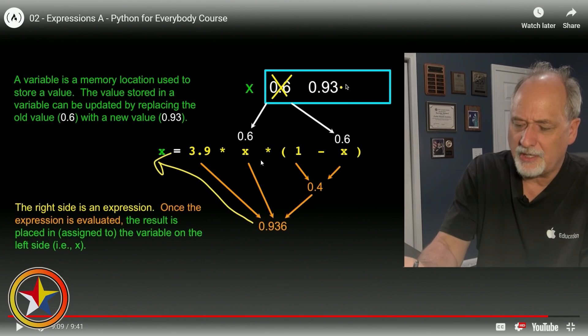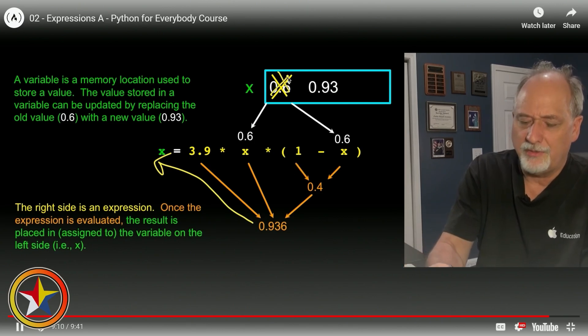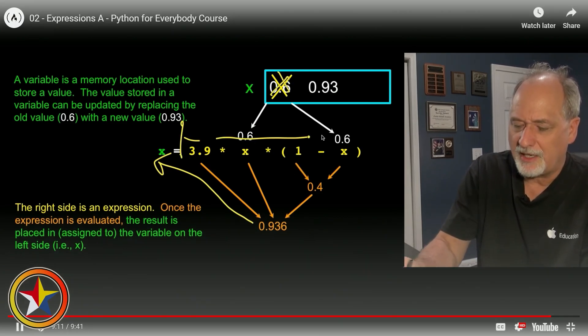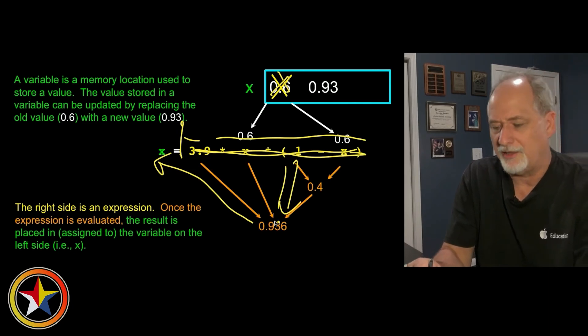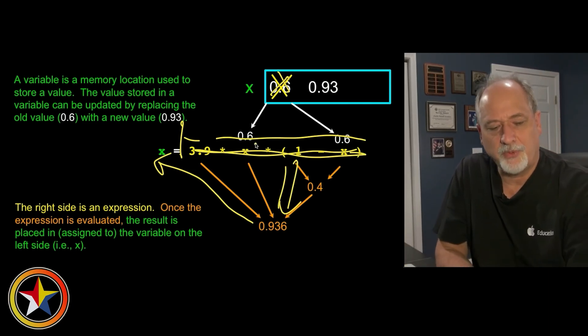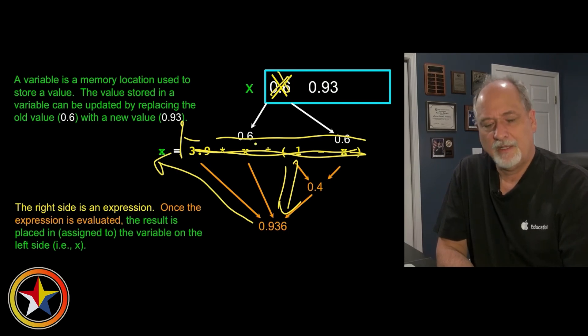If you run it again, Python plugs the new value - like 9.36 - into both sides of the expression, computes a new answer like 0.93, and that becomes the new value of x. The old value is gone at that point.